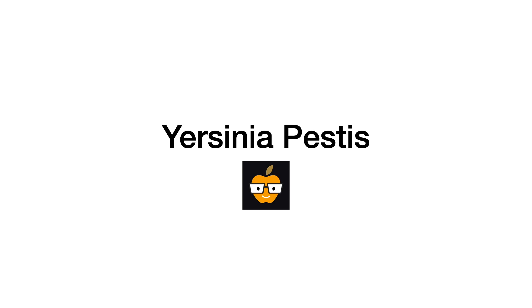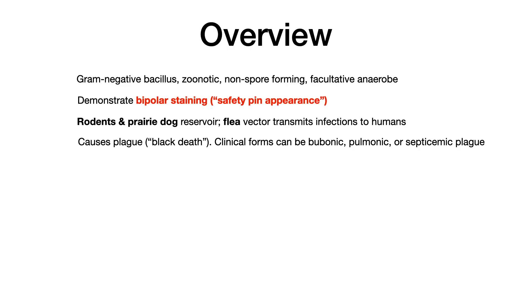Let me teach you everything that you need to know about Yersinia pestis. Yersinia pestis is a gram-negative bacillus. It is zoonotic, non-spore-forming, and a facultative anaerobe.